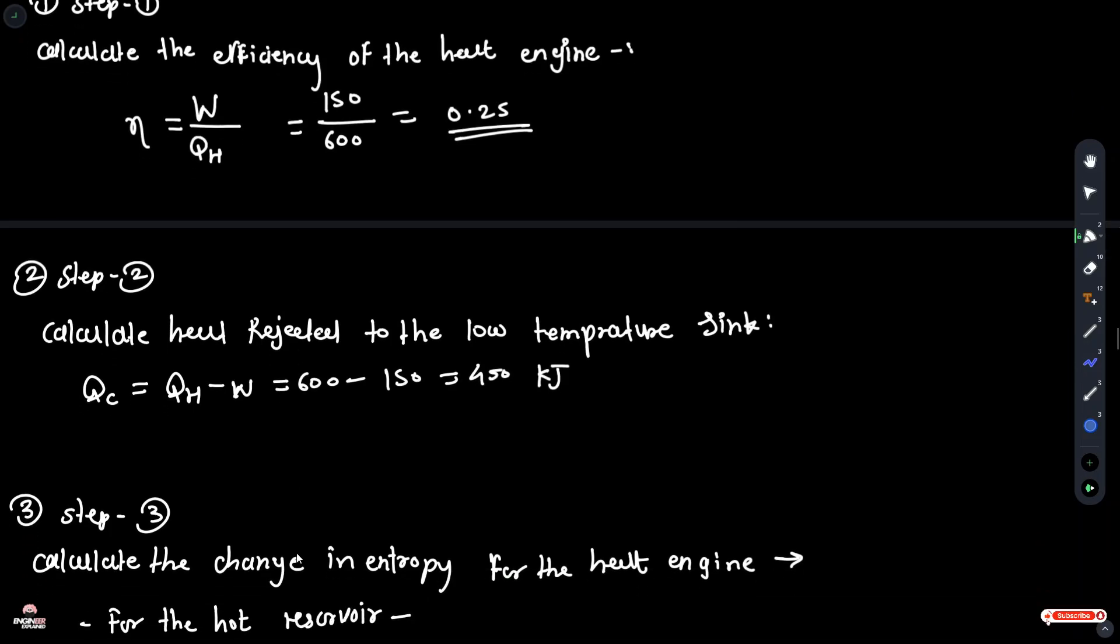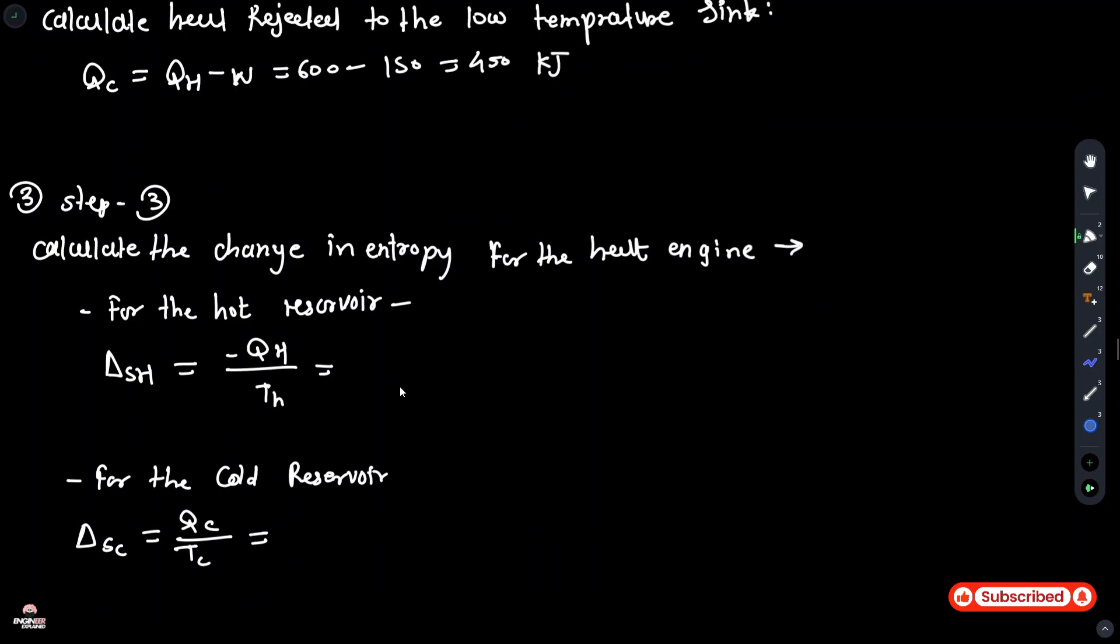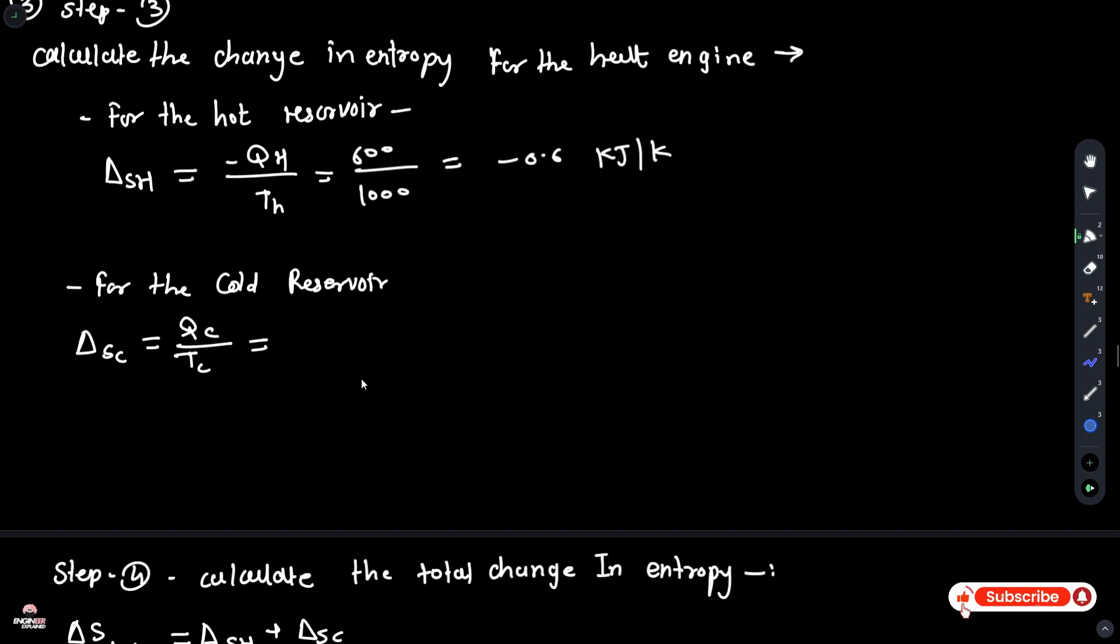Step 3: calculate the change in entropy for the heat engine. For the hot reservoir, entropy change is equal to minus QH, 600 kJ, divided by TH, 1000 K, which is equal to minus 0.6 kJ per Kelvin. For the cold reservoir, QC 450 divided by 300 is equal to 1.5 kJ per Kelvin.